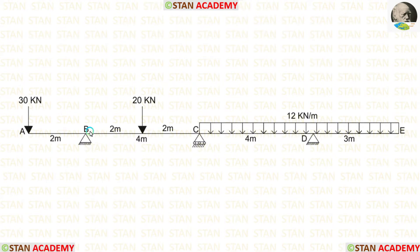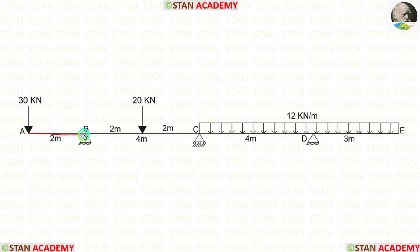In this beam, there are two spans: span BC and span CD. Also, there are two overhanging spans. On the left side, we have an overhanging span AB. On the right side, we have an overhanging span DE. So, we have overhanging on both sides.